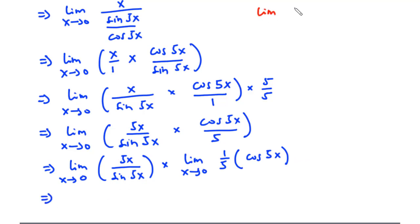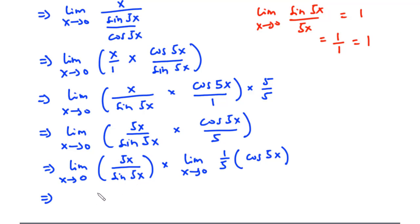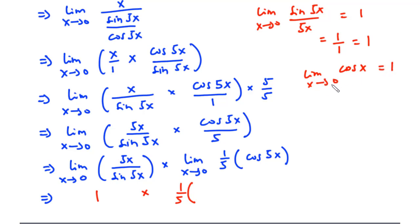The limit of sine 5x over 5x as x approaches 0 is 1, and since 5x over sine 5x is the reciprocal, it is also 1. Since 1/5 is a constant, we take it out: (1/5) times the limit of cos 5x as x approaches 0. The limit of cos 5x as x approaches 0 is 1. So we have 1 times (1/5) times 1, which equals 1/5.